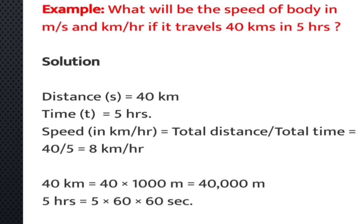So 1000 divided by 60 times 60 equals 5 by 18. If any quantity is given in km/h, we multiply by 5/18 to convert it to meters per second.